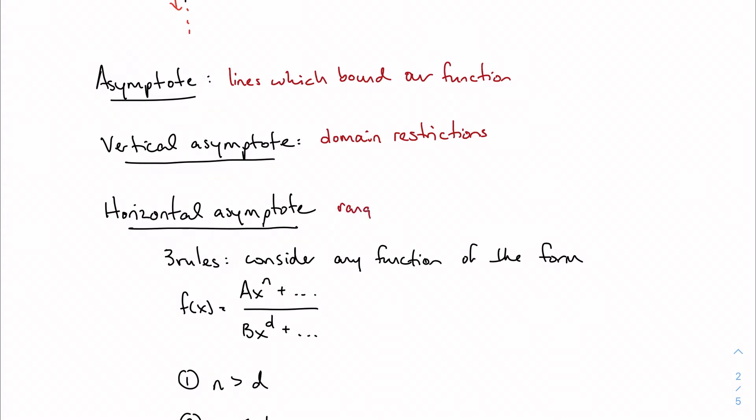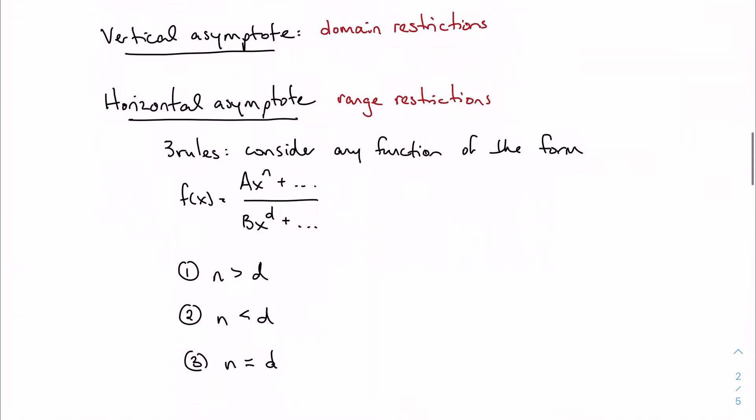My horizontal asymptotes are my range restrictions. We learned in Algebra 2 about how to find horizontal asymptotes. This is something the book does not do, which gives us a leg up. We learned about three different rules to determine the equations of horizontal asymptotes. Consider any rational function of this form: the quotient of two polynomials. I labeled the leading coefficients a and b and labeled my highest powers n and d for numerator and denominator.